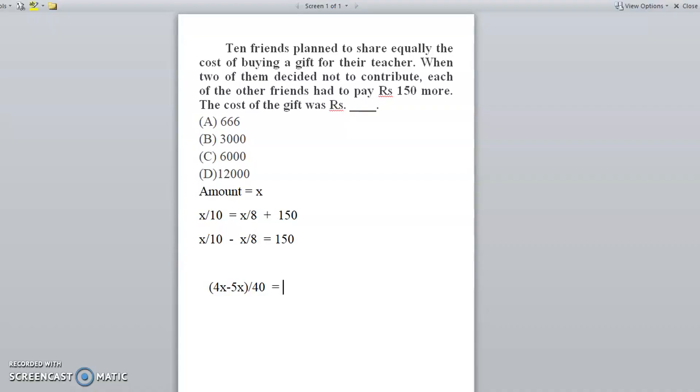So 4x minus 5x will become minus 1x divided by 40 is equal to 150. Minus 1x is equal to 6000. As the amount cannot be negative, we assume we take it as x is equal to 6000. The right answer is option C.